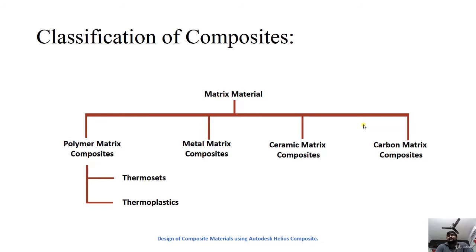Classification of composites based on matrix material gives four categories: polymer matrix composites, metal matrix composites, ceramic matrix composites, and carbon matrix composites. Polymer matrix composites are further divided into thermosets and thermoplastics, both of which belong to the polymer family.